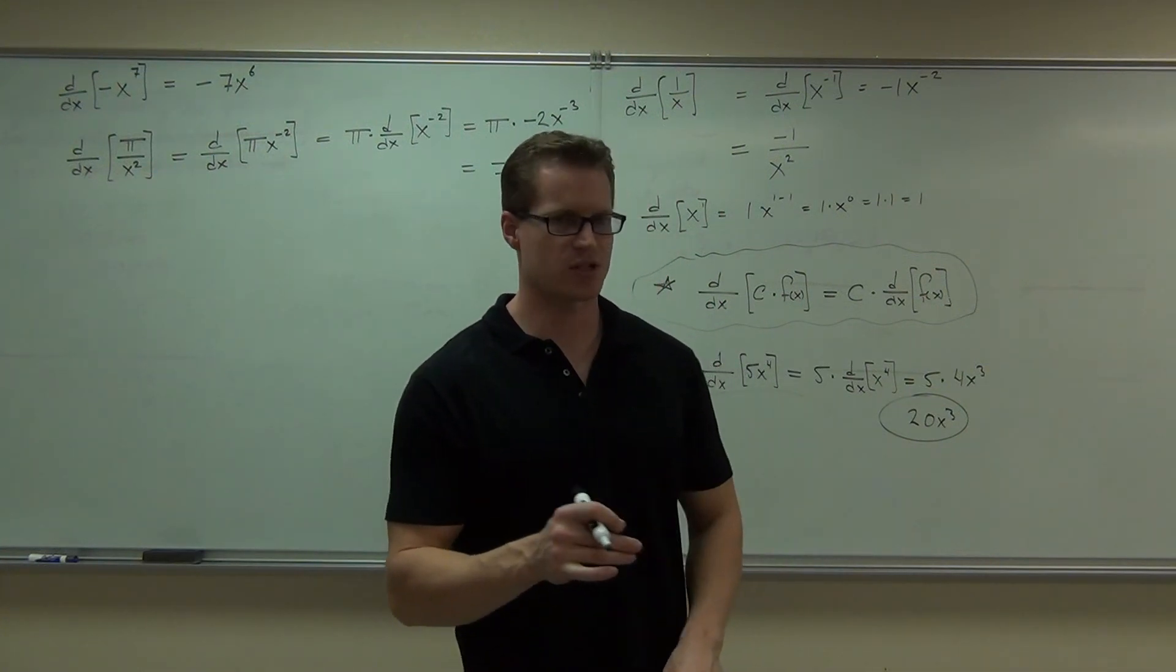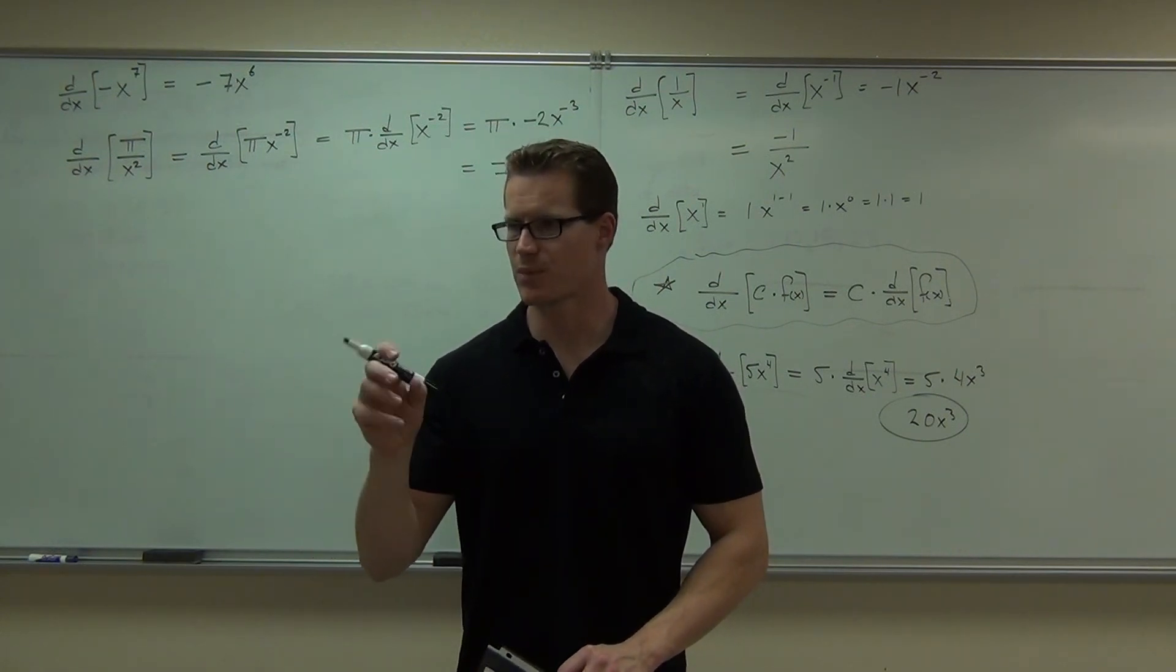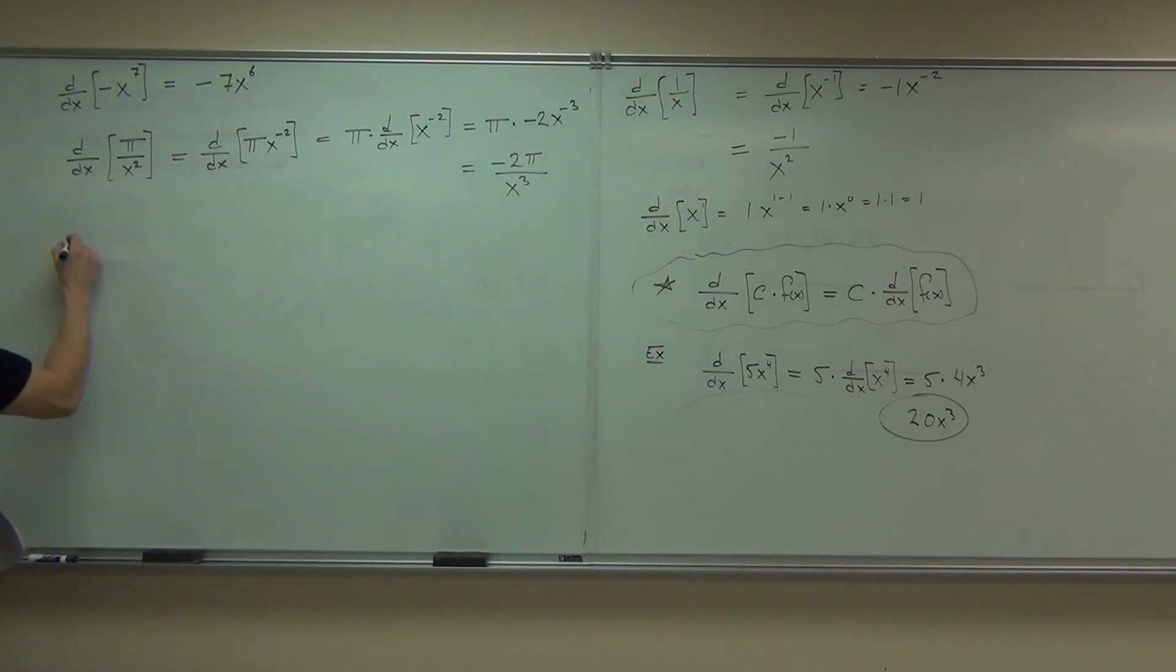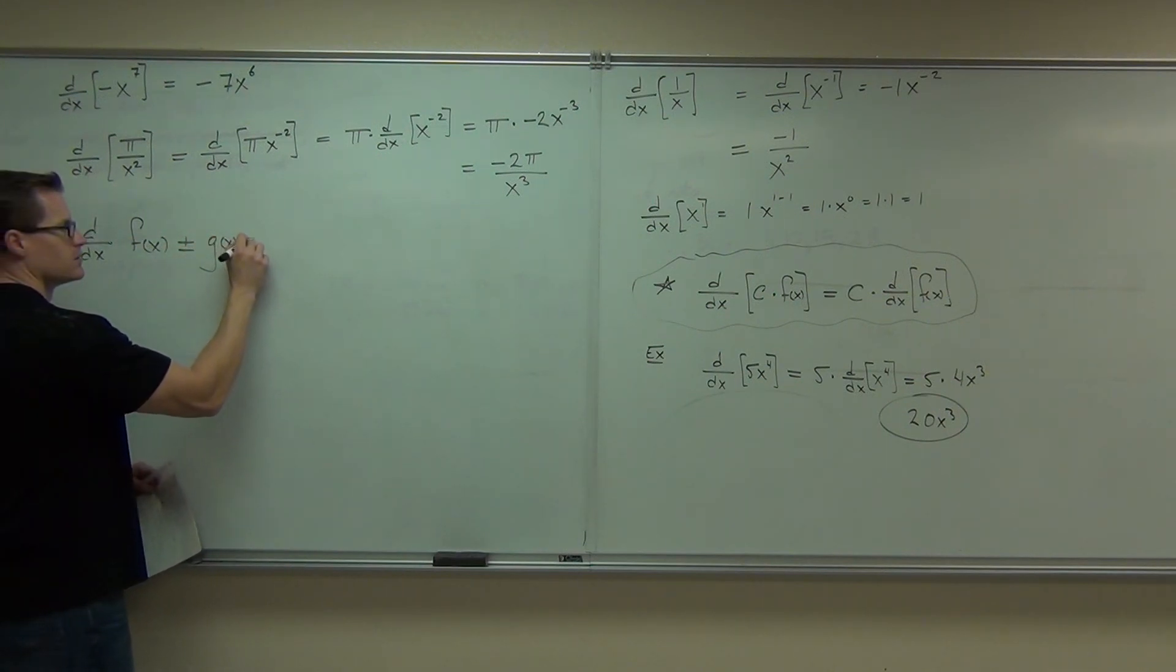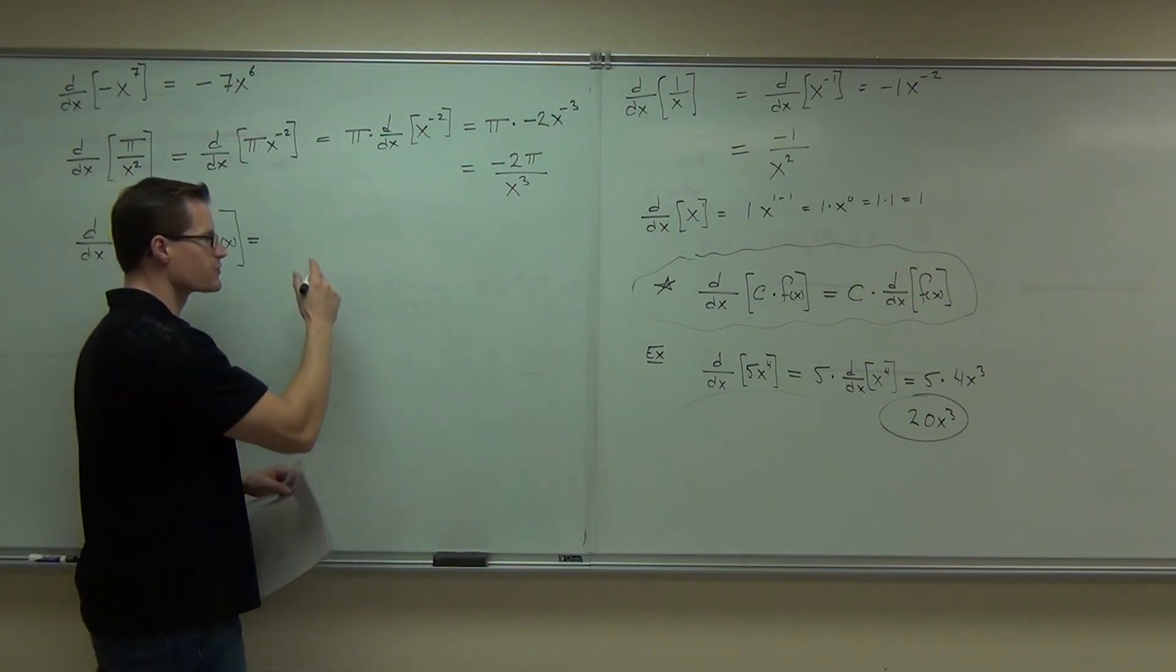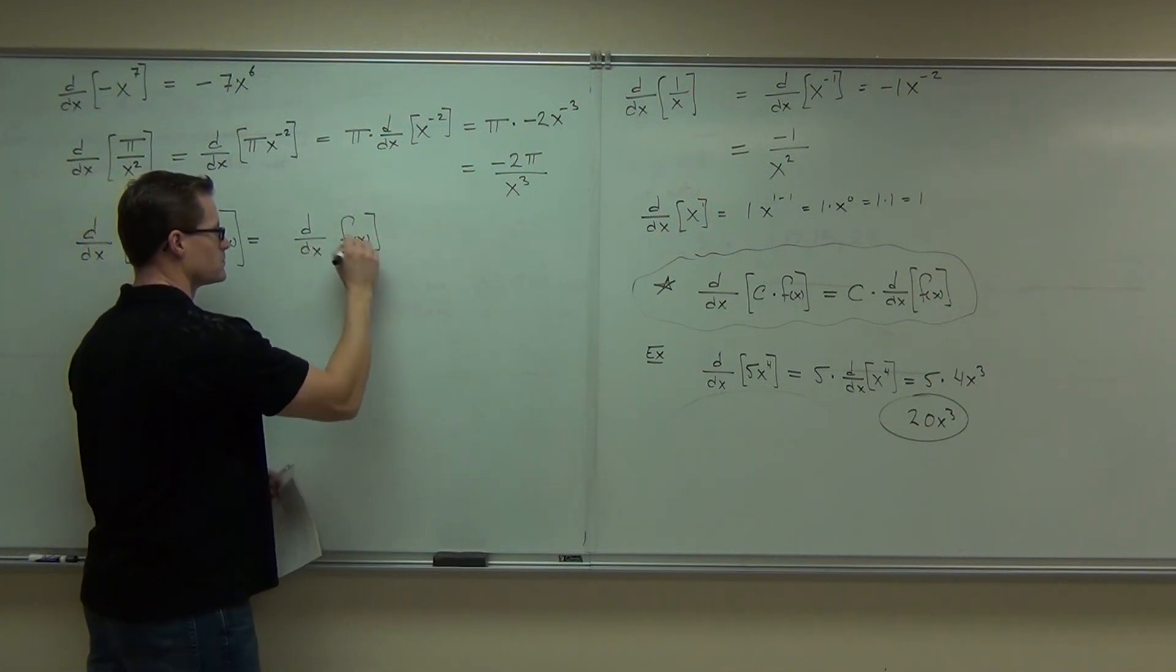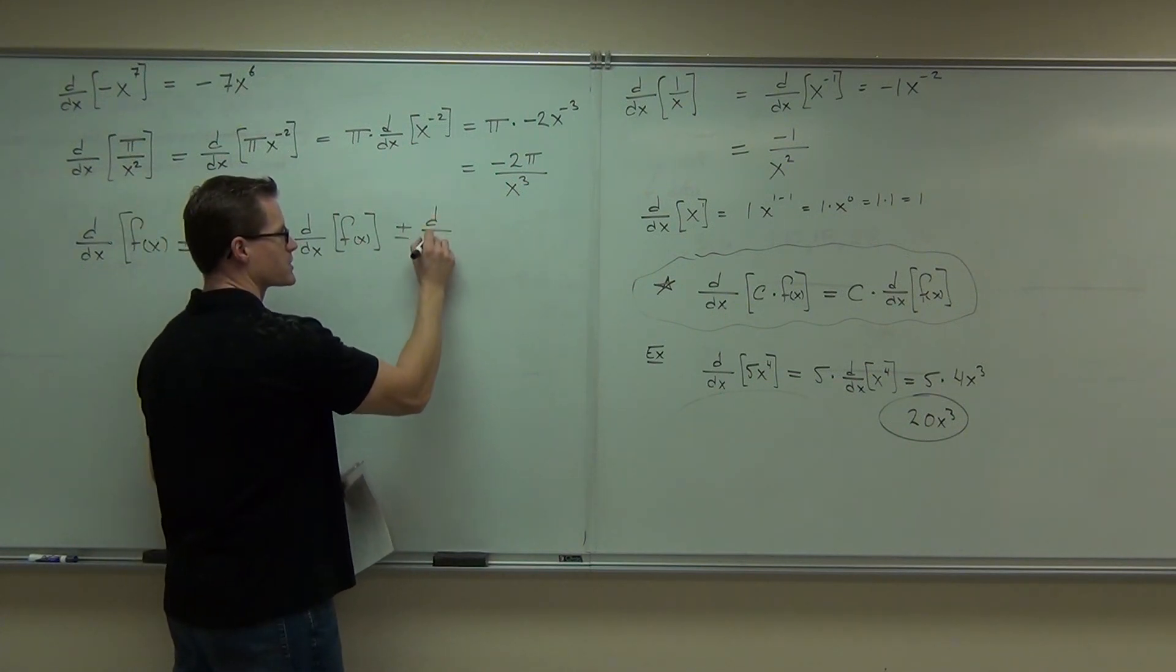Just like we can do with limits. You see, when we're finding derivatives, we're actually finding limits, right? With limits, you can pull constants out. With limits, you can separate by addition and subtraction. True? We can do the same thing here. If you have the derivative of a couple functions being added or subtracted, that's the same thing as a derivative of the first function plus or minus, if using subtraction, the derivative of the second function.